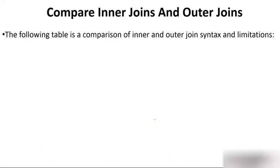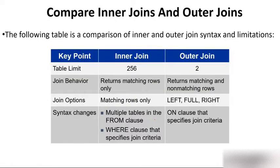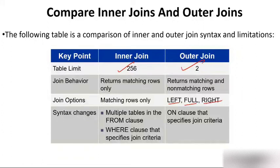Comparing inner join and outer join: for table limit, inner join can handle 256 tables but outer join can be applied only on two tables. For join behavior, inner join returns only matching rows while outer join returns matching as well as non-matching rows. For syntax, inner join uses multiple tables in the FROM clause with a WHERE clause specifying join criteria, while outer join uses an ON clause. You can do left, full, or right outer join.